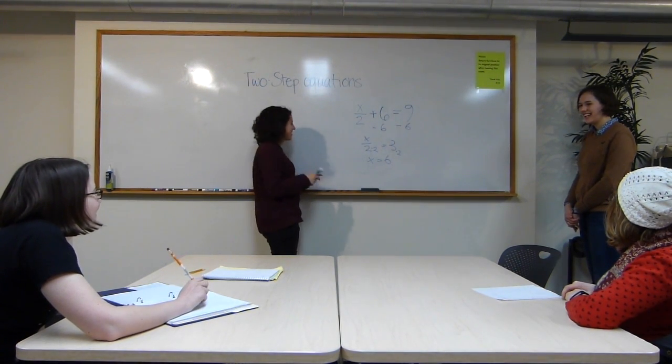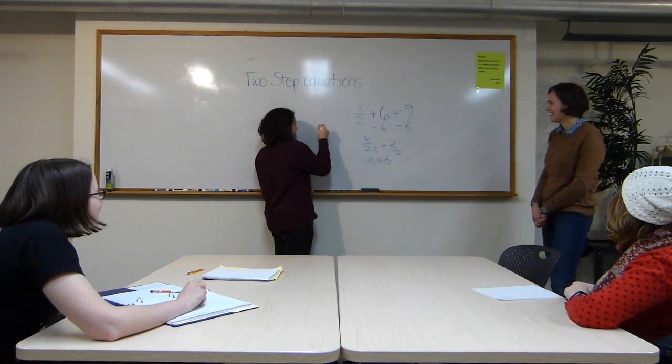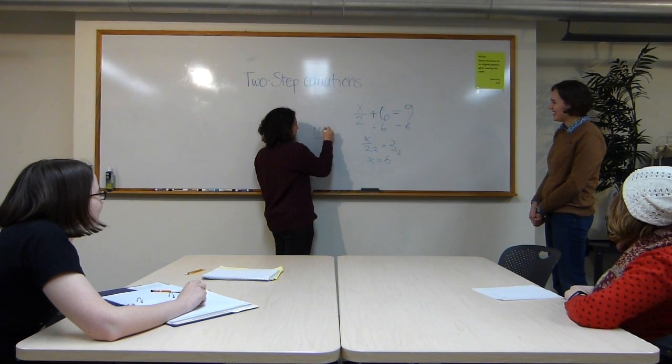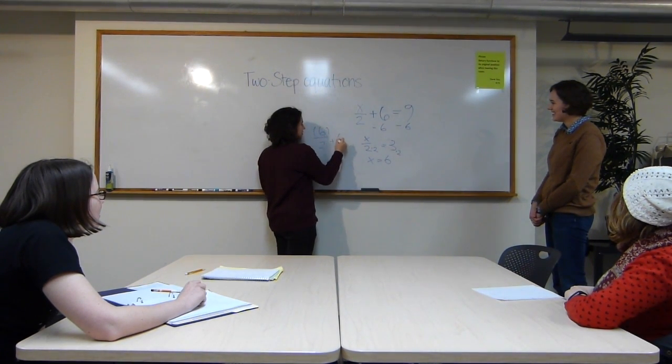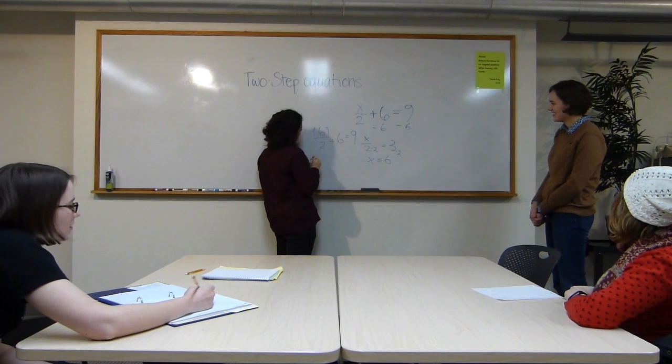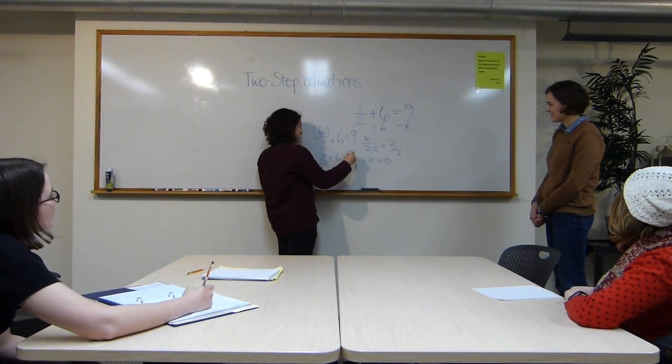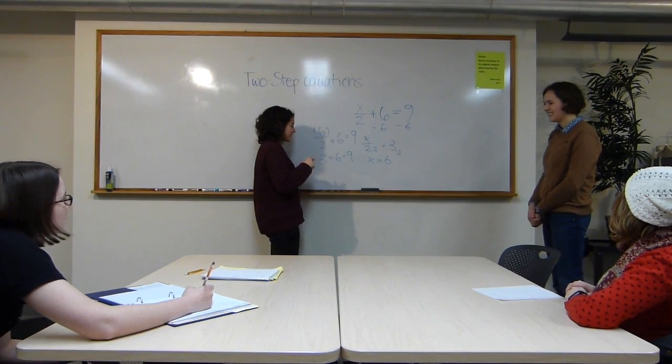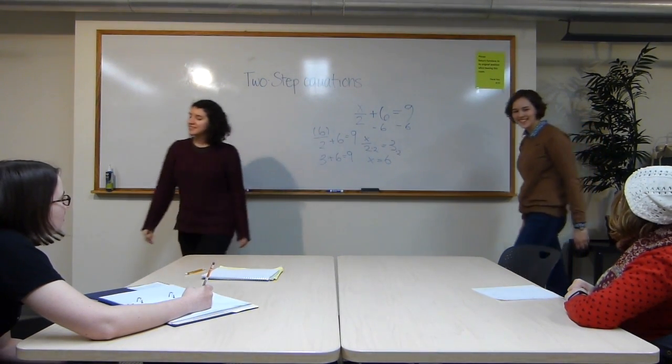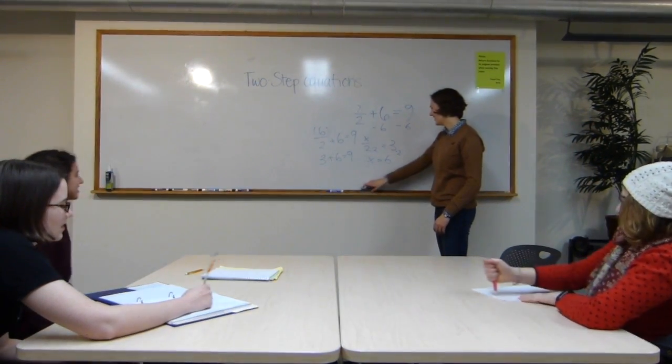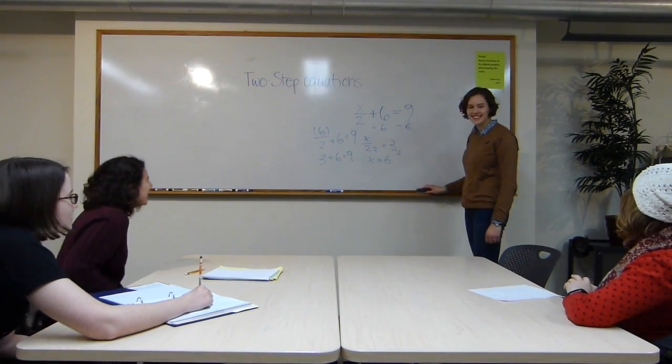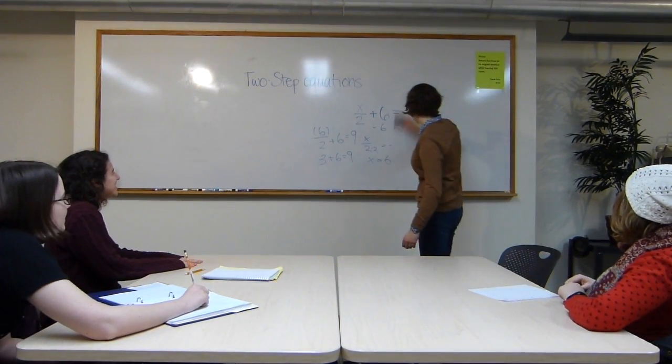Check it. Okay, so let's check it. 6 divided by 2 is 3, and 3 plus 6 equals 9. What do we think? Sounds good. That's good. Okay. Any questions? Okay.